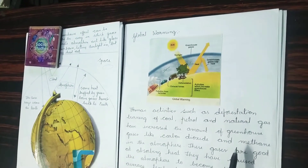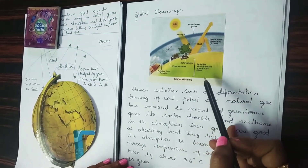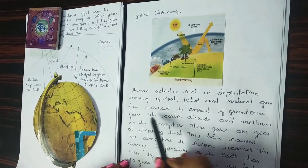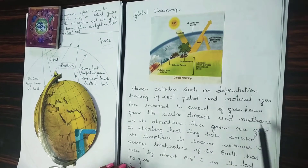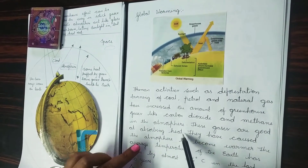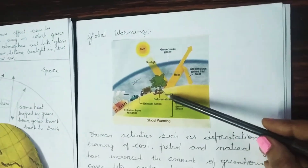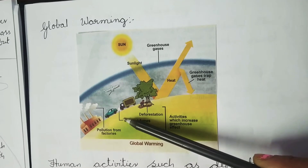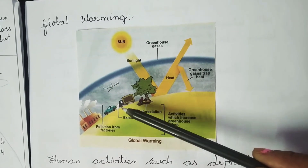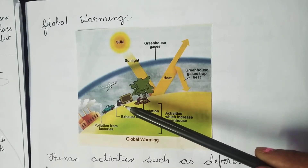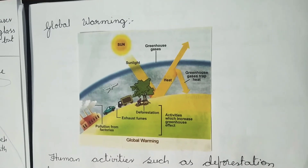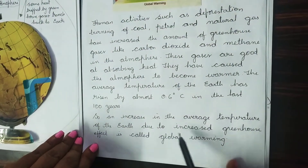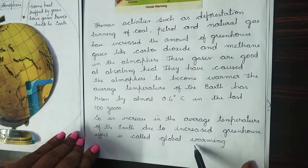When you understand this, you can easily understand what global warming is. Human activities such as deforestation, burning of coal, petrol and natural gas have increased the amount of greenhouse gases like carbon dioxide and methane in the atmosphere. These gases are good at absorbing heat. Deforestation, exhaust fumes from vehicles, and pollution from factories all make the atmosphere warmer. The average temperature of the earth has risen by almost 0.6 degrees Celsius in the last 100 years. An increase in the average temperature of the earth due to increased greenhouse effect is called global warming.